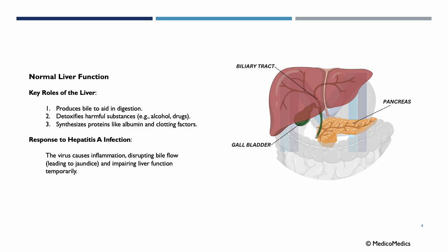Let's start with normal liver function. Key roles include producing bile to aid in digestion, detoxifying harmful substances like alcohol and drugs, and synthesizing proteins like albumin and clotting factors. In response to Hepatitis A infection, the virus causes inflammation, which disrupts bile flow, leading to jaundice, and impairing liver function temporarily. Bile is a digestive fluid produced by the liver that helps break down fats and eliminate waste products like bilirubin.